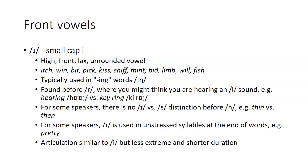The next lower front vowel is the I, referred to as the small cap I vowel. It is also high and front but lax and unrounded. It's found in words such as itch, win, bit, pick. It's the vowel that's typically present in -ing combinations before the -ng consonant.